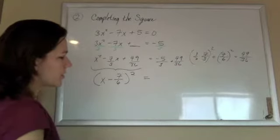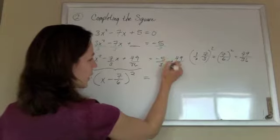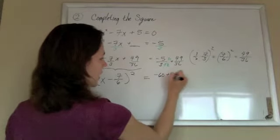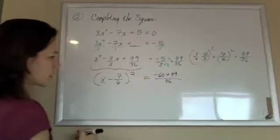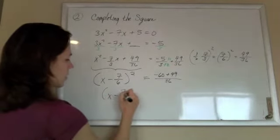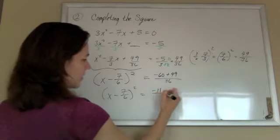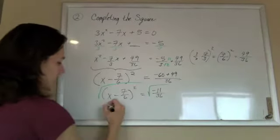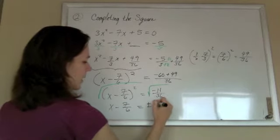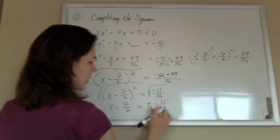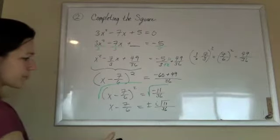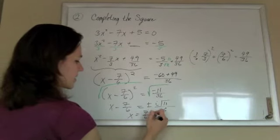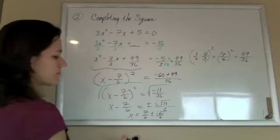So on this side here, all we have to do is get a common denominator, multiply the top and bottom by 12. I'm going to get negative 60 plus 49, and that's going to go over 36. So I'm going to get negative 11 over 36. So that would be square root of both sides, so x minus 7 sixths equals plus or minus i root 11 over 6. So x equals 7 over 6 plus or minus i root 11 over 6. Good luck.